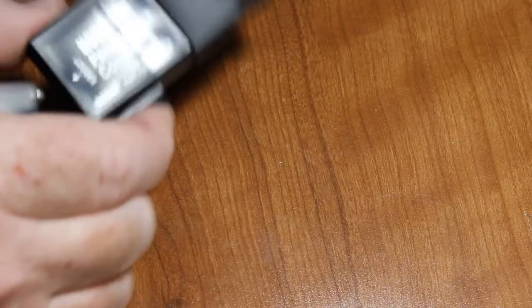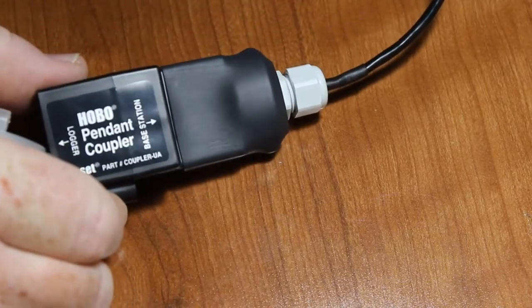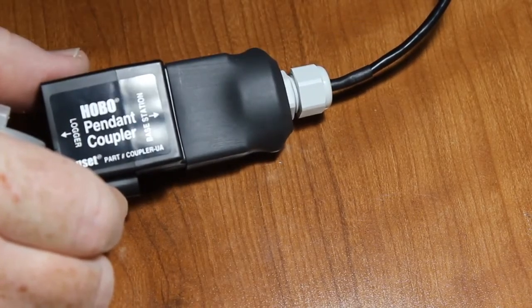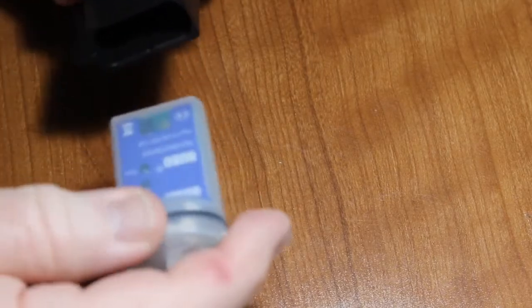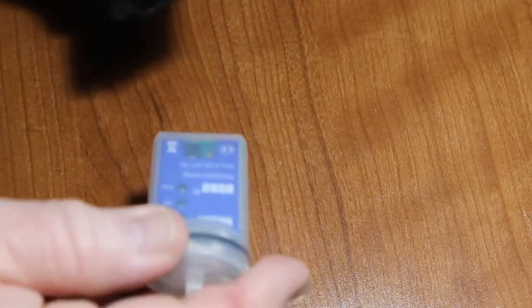This is a base U1 or what people call a pendant coupler. It says pendant coupler on it. It is really the base U1. And you can see that there is a corresponding slot in here that the logger slides into.